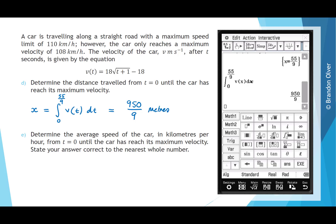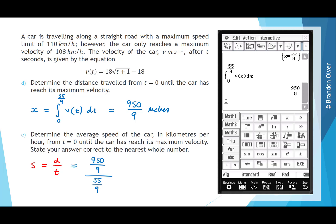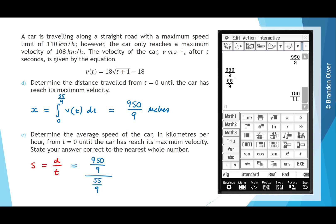For part E, we're asked to determine the average speed of the car in kilometres per hour from t = 0 until it reaches maximum velocity, correct to the nearest whole number. The average speed equals distance over time. The distance travelled was 950/9 and the time taken was 55/9, so we compute (950/9) divided by (55/9). Executing gives 190/11, and that is currently in metres per second.